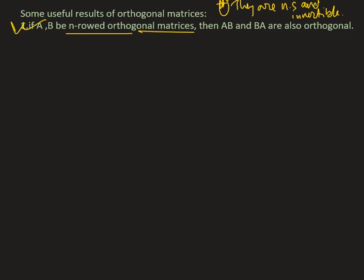If A and B are both orthogonal matrices, then AB and BA are also orthogonal. This is the theorem we need to prove. Let's start the proof. Since A and B are both square matrices of order n,